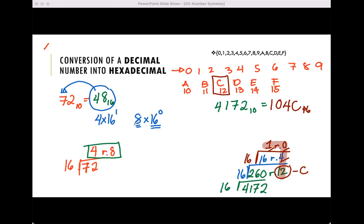This is just 1, and we will end up having 64 plus 8, and that is 72.